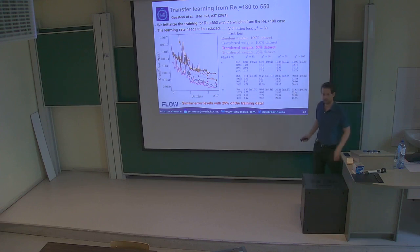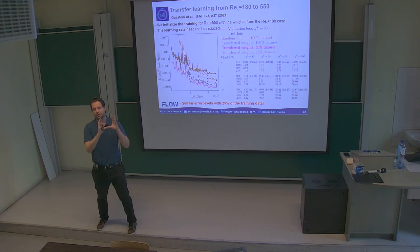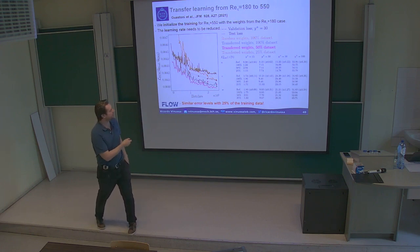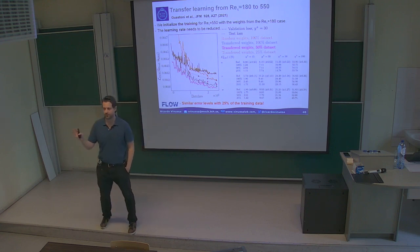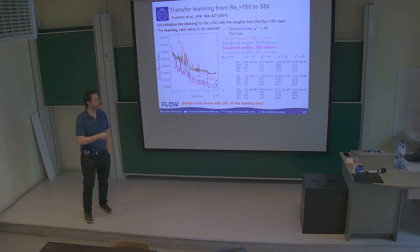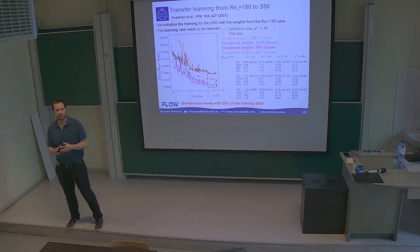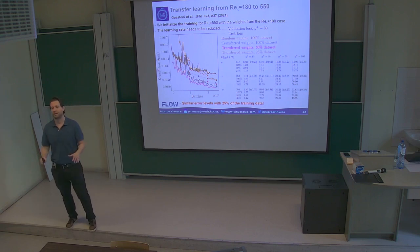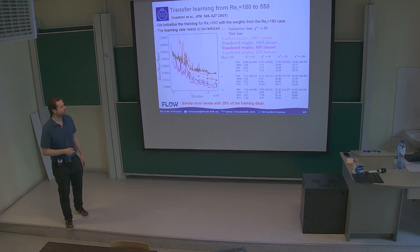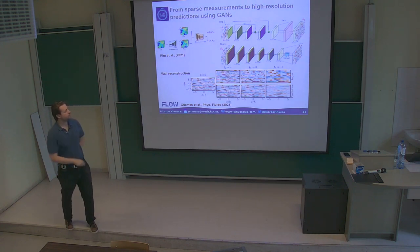Transfer learning is also important here. We can take information from one flow case and transfer the weights of that trained network to another case, enabling a more robust prediction. This allows us to reduce the amount of training data by a factor of four. If we need to train four times less data, we have something much more sustainable and robust. Transfer learning should be a must for anyone using deep learning—especially with large models. If you're not using transfer learning with large GPU machines to train deep learning networks, you arguably shouldn't be allowed to.